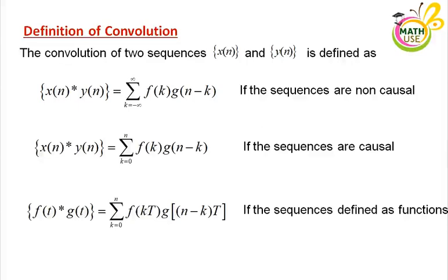The same definition, but slightly changed: x of n star y of n is equal to summation k equal to 0 to n of f of k times g of n minus k, if the sequences are causal. And f of t star g of t is equal to summation k equal to 0 to n of f of k times T times g of n minus k times T, if the sequences are defined as functions.